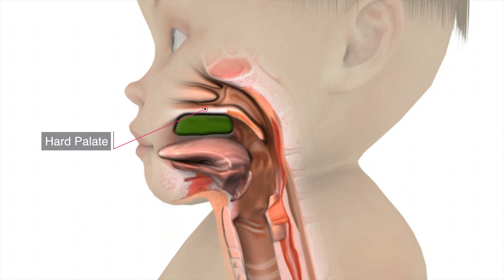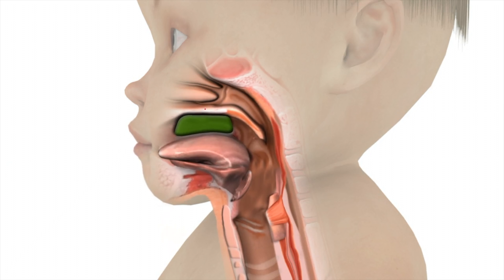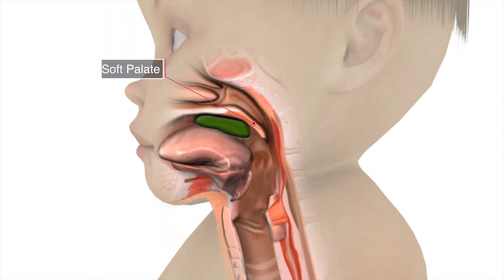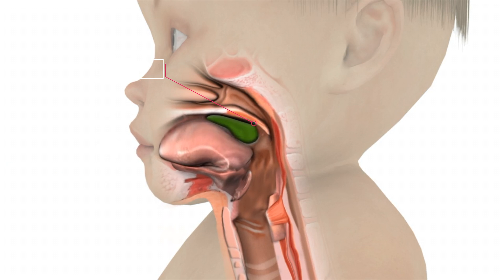Once the food bolus has been processed by the mouth, the oral transit stage begins with the tongue raising up against the hard palate while the back of the tongue drops to allow the bolus to move into the back of the mouth. Simultaneously, the soft palate raises up against the back, closing off the passageway into the nose and preventing any food or liquids from regurgitating up into the nose.